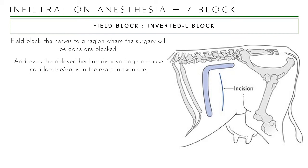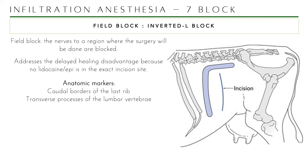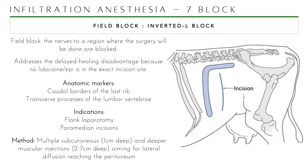Indications for the inverted-L block include flank or paramedian incisions. It can also be done as a mirror image if you need to block more space. The method requires multiple injections at various depths, because if you are doing a flank laparotomy, you need to block the peritoneum as well — so your needle should reach the peritoneum. Same fan-shaped concept: as you inject, sway the needle from dorsal to ventral and caudal to cranial, infiltrating more as you withdraw the needle.